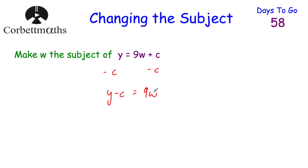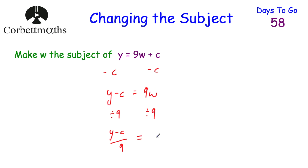Now we've got Y subtract C equals 9W. We don't want 9W, we just want W, so we don't want this multiplied by 9. We're going to divide both sides by 9. On the left hand side we had Y subtract C, and we're dividing by 9, so it's Y subtract C all over 9. On the right hand side, we had 9W; we divided by 9, so we're just left with W. Turning this around: W equals Y subtract C over 9, and we've made W the subject.